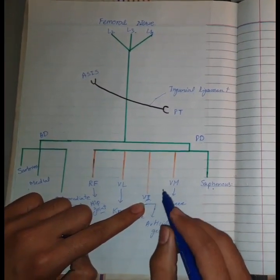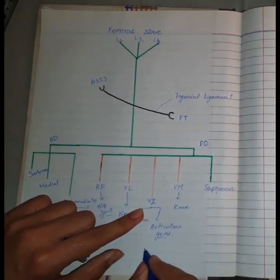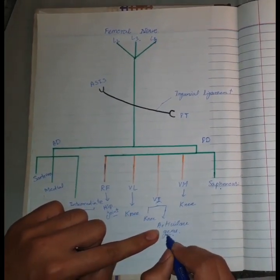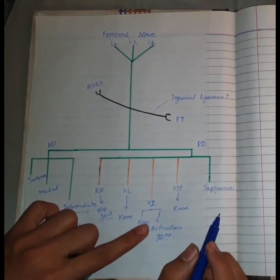So there is a mnemonic, 'genu in mediation,' to remember that the articularis genu is supplied by vastus intermedius. It's just a mnemonic only.